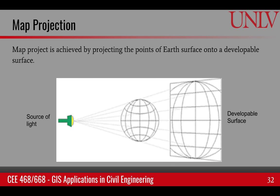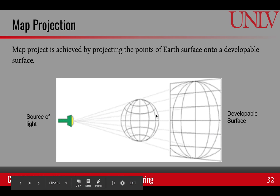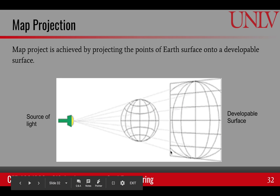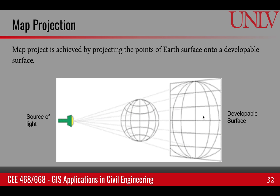The idea behind map projection is that we place a light source on one side of the earth and the developable surface on the other side. As the light rays pass through the earth and project a point onto the developable surface, it renders all of the points on the surface as a map on the flat surface, giving us the points of the earth mapped onto a flat surface.